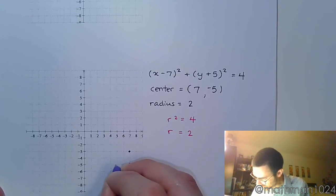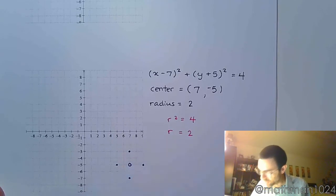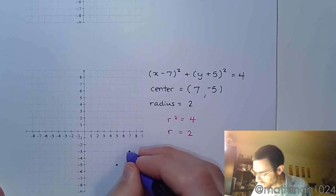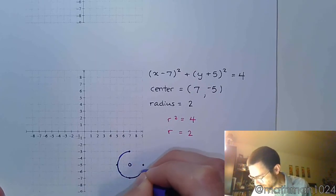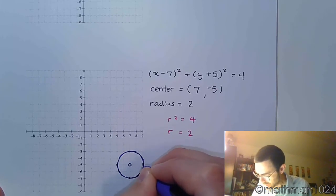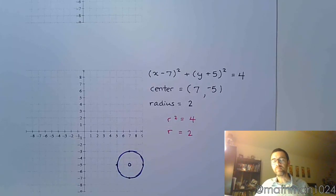And do a radius of 2. So up, down, left, and right, 2 units. And then you draw the circle. And there we go. And that's really all there is to that. All right?